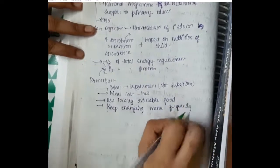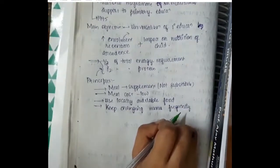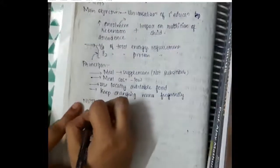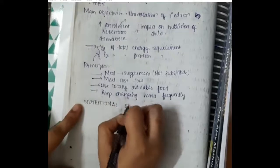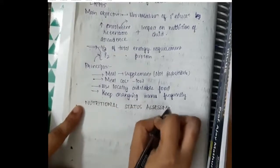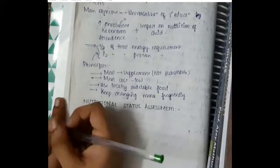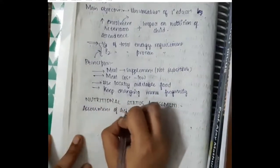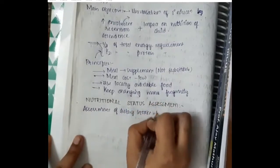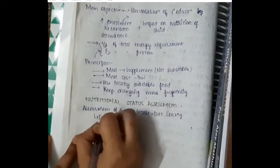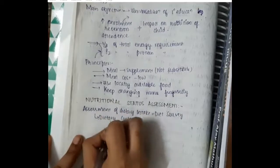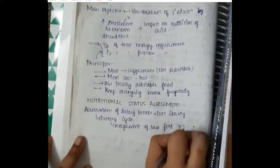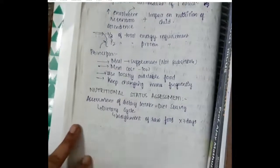Now, nutritional status assessment. We have put forward some important criteria for assessing the dietary intake. The assessment of dietary intake can be done by diet survey, that is dietary cycle, where we weigh the raw foods which we take for seven days.